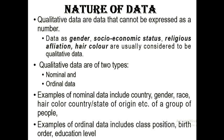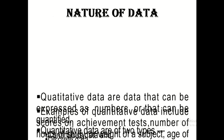Examples of nominal data — where numbering is just for the purpose of identification — include country, gender, race, hair color, and state of origin. Examples of ordinal data include your position in class, educational level, and similar rankings where order has meaning.